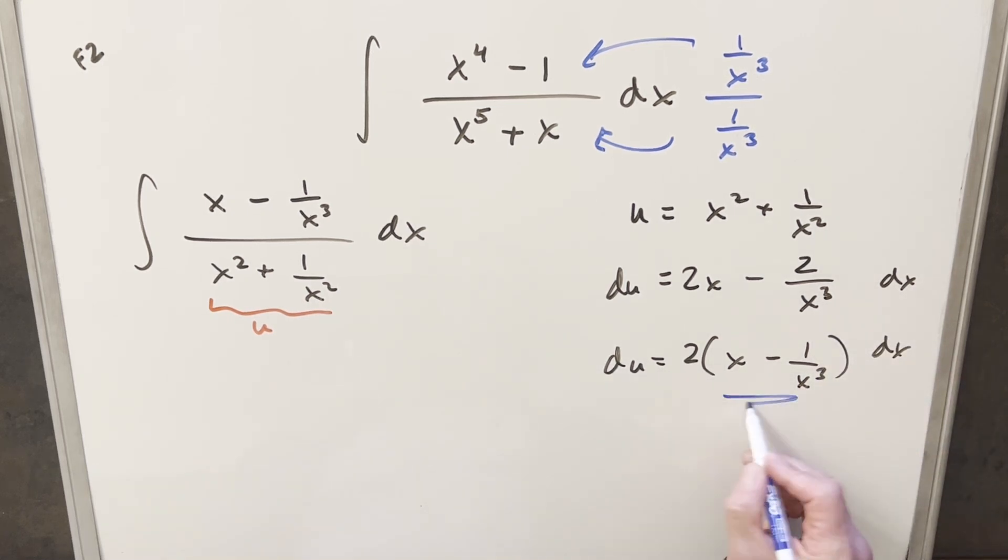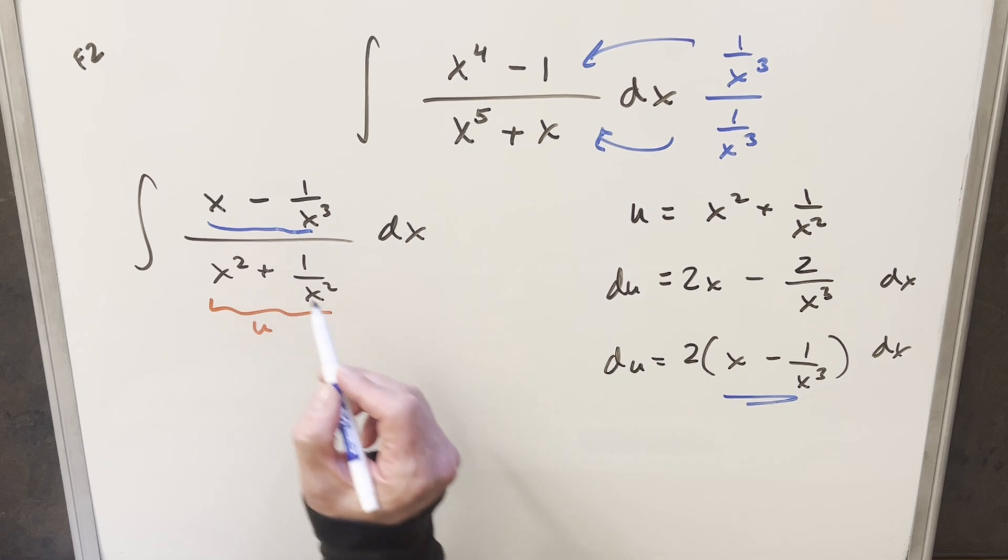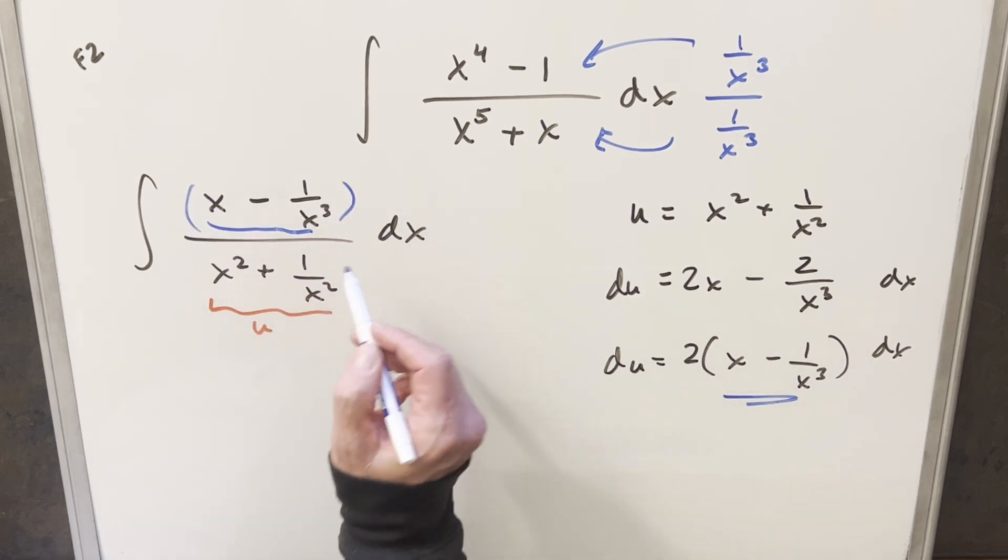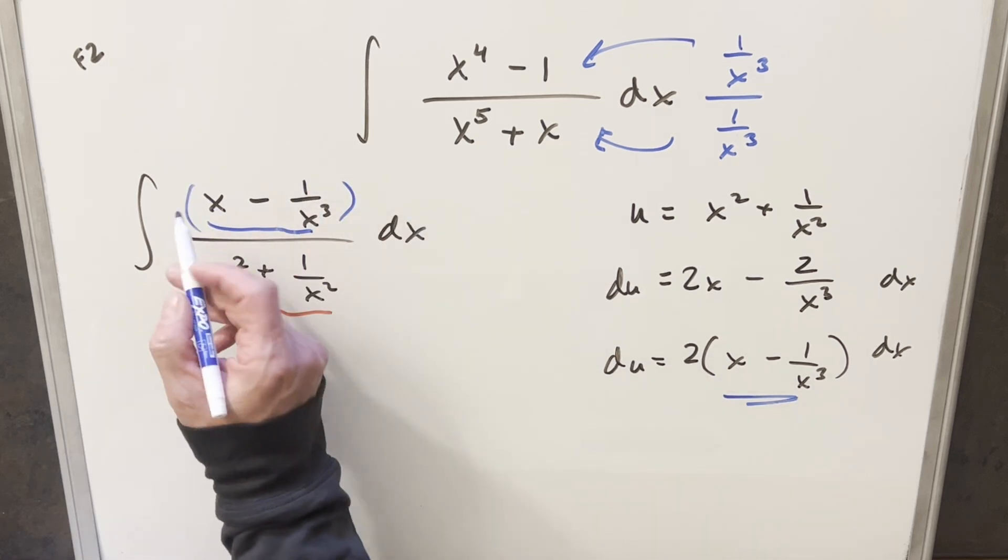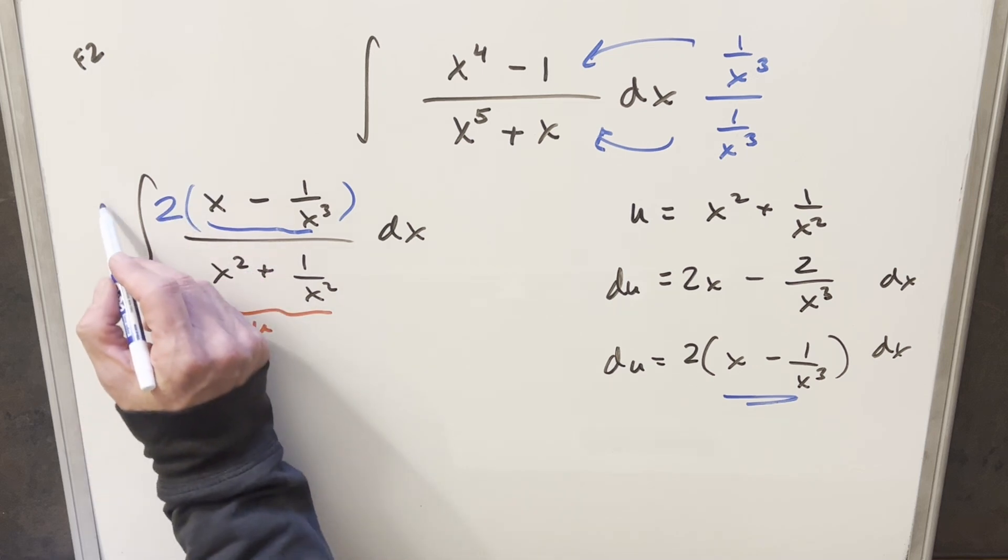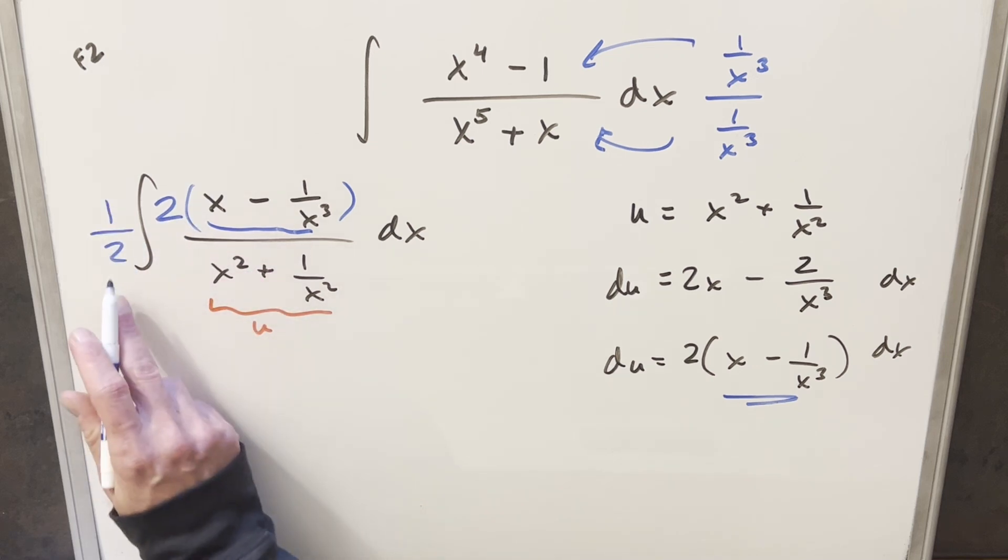And then we notice that what's right here, this is exactly the same as what we have right here. But we don't have this two. So I'm just going to kind of create this in order that we can have du in the numerator. So I'll multiply by two here, and then multiply by a half out front, just so I'm not changing it.